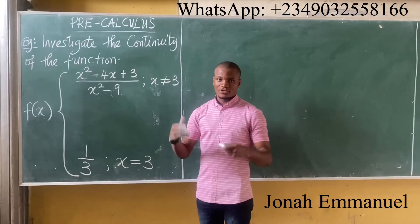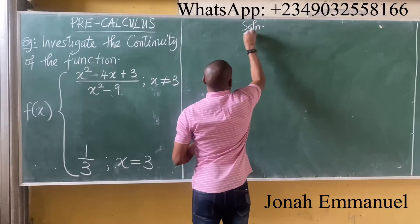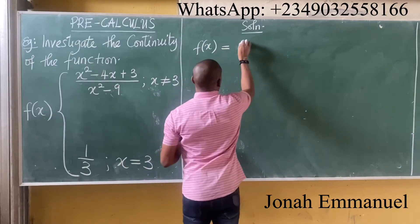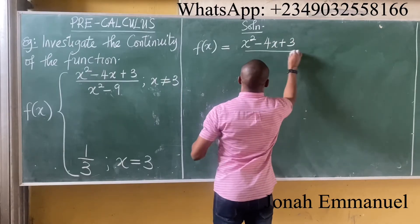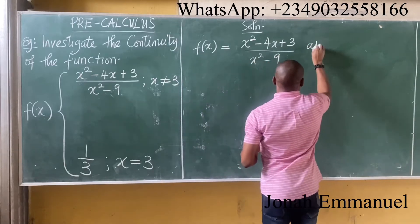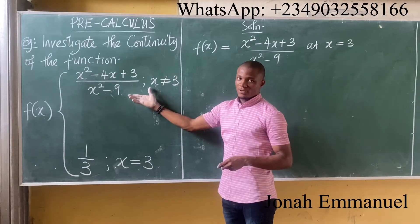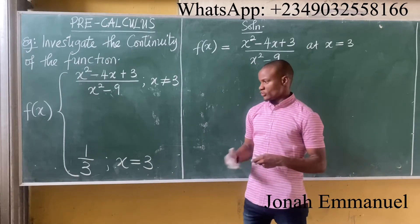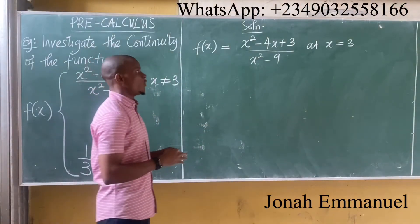Let's work through the solution. We have f(x) equal to x² minus 4x plus 3, all over x² minus 9, at x equal to 3. Using direct substitution gives 0 over 0, which is indeterminate. So let's try an alternative method to see if our answer gives us 1/3.